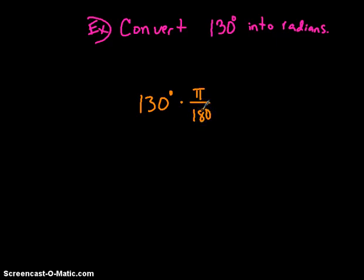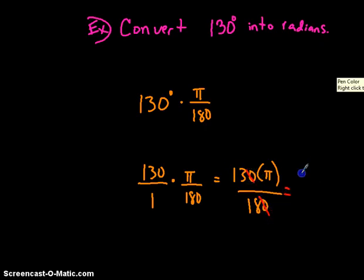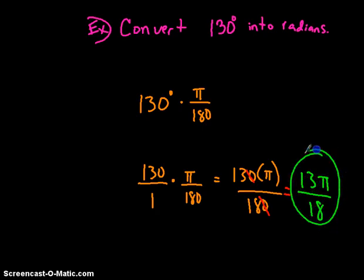If I get a number times a fraction, I typically make that number a fraction too. So I'll take 130 and make it into a fraction, then multiply that by pi divided by 180. When I multiply that, I get 130 times pi divided by 180. You simplify — the tens cancel out — and that leaves you with 13 pi divided by 18. Since 13 is a prime number there's no way to break that down further, so 130 degrees equals 13 pi divided by 18.